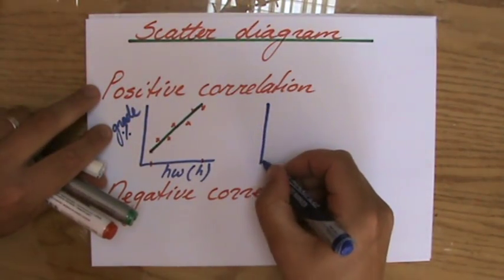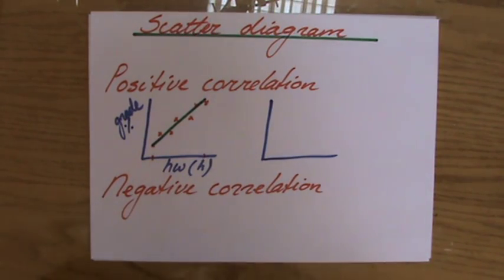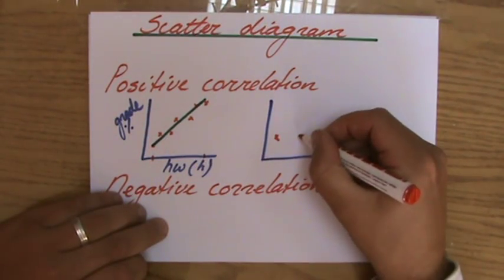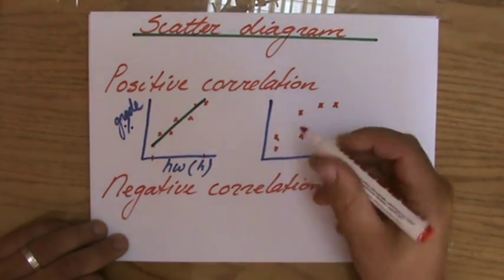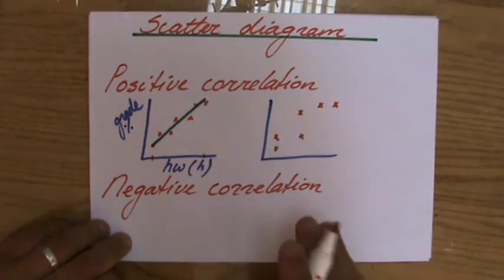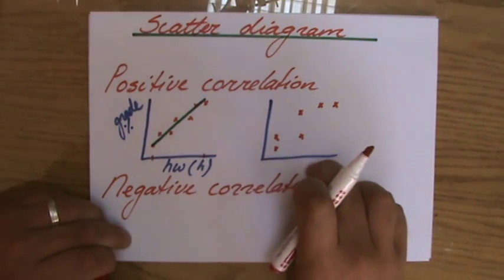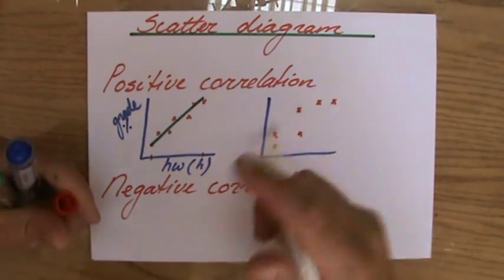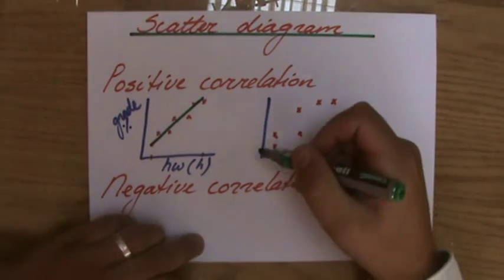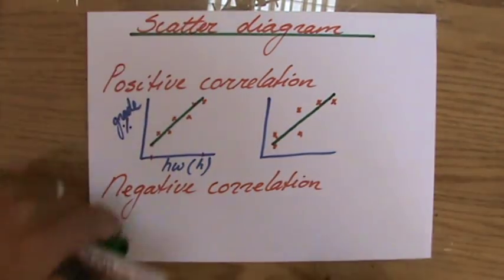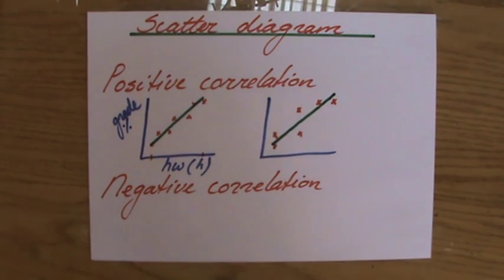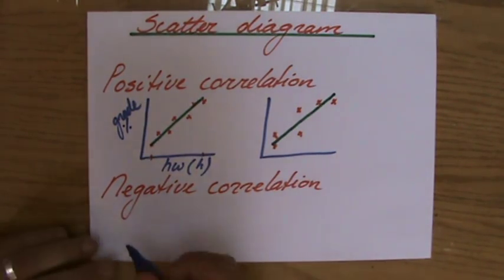Now in a different situation, in a different example, perhaps you plot these points. And you could say, well, there is a positive correlation. I can see that when X is going up, Y is also going up, but it's quite a weak positive correlation because the points are quite far away from that line of best fit.